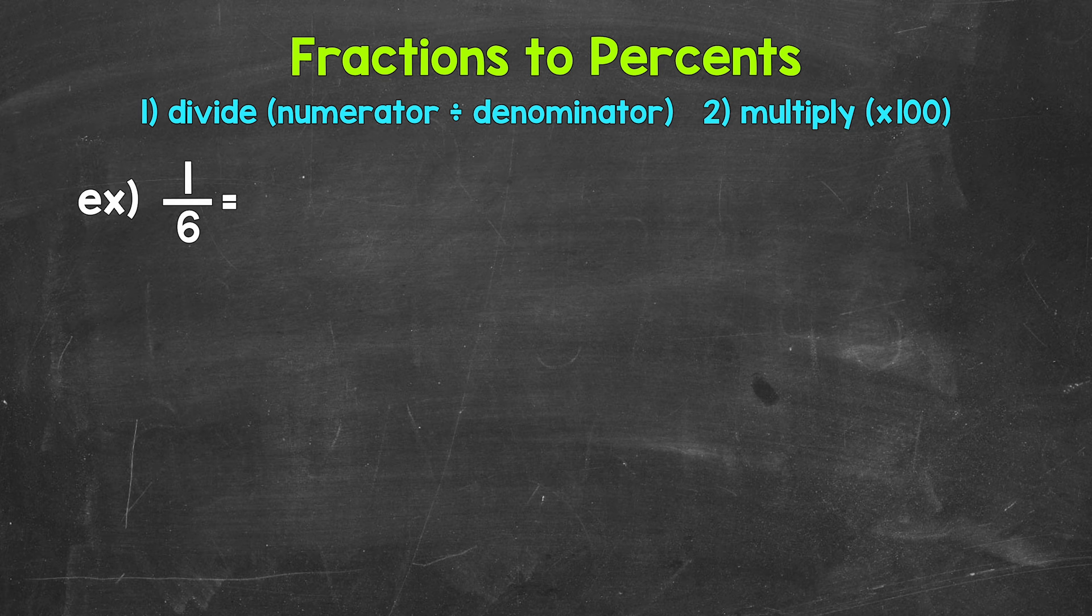Once we have that decimal, we convert it to a percent by multiplying it by 100. A quick way to multiply by 100 is to move the decimal twice to the right. So we need to start by converting this to a decimal by dividing. So for 1/6, we can set this up as 1 divided by 6.